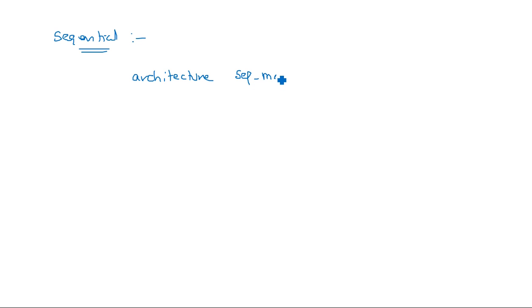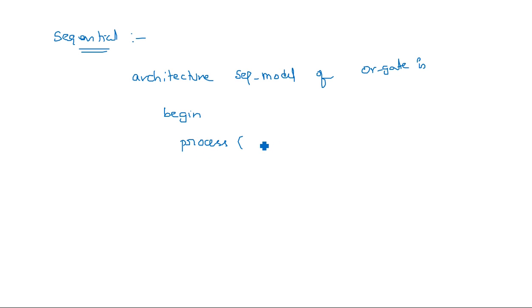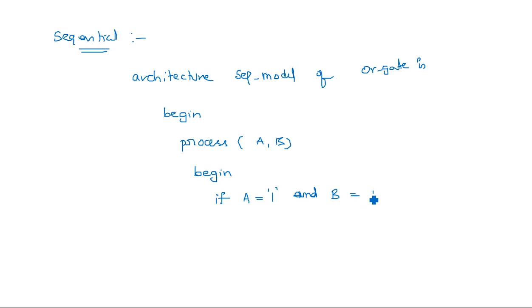Coming to the sequential model — in sequential signal assignments: architecture sequential_model of or_gate is begin, then process of A comma B (the 'is' keyword is optional), then begin process. Inside: if A is equal to 1 and B is equal to 1, you write out further conditions.